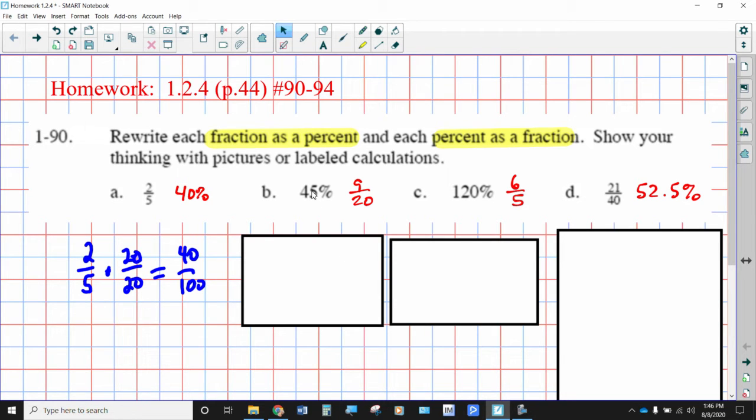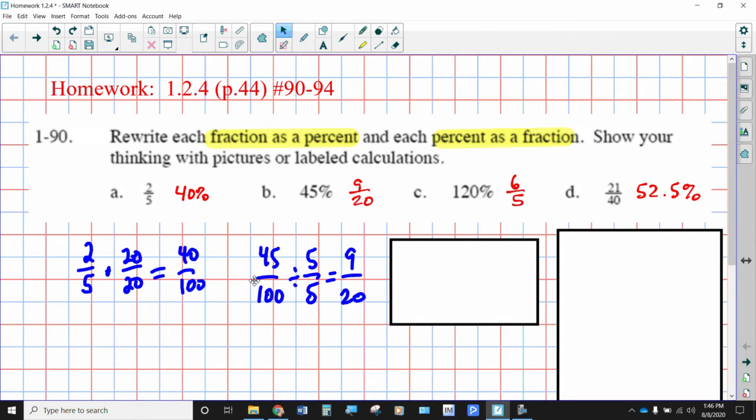Working in reverse, 45% literally means 45 out of 100 or 45 hundredths. We would look for the greatest common factor of 45 and 100, which is 5, and divide the top and bottom by 5 to get 9/20. We use the giant one a lot for rewriting equivalent fractions, but really the giant one process is also used to divide numerators and denominators so we can simplify fractions. 45 hundredths in simplest form is 9/20.